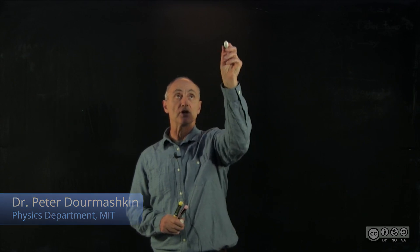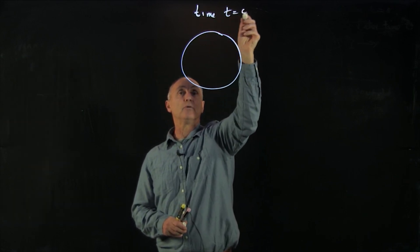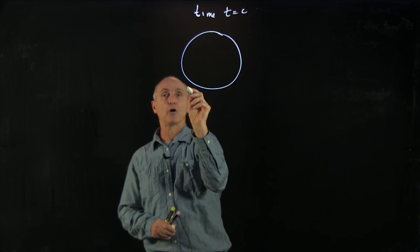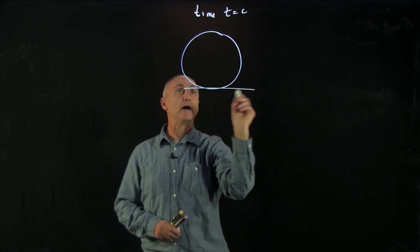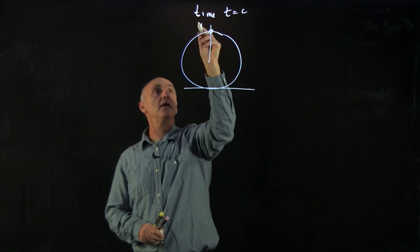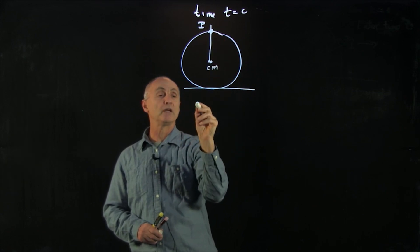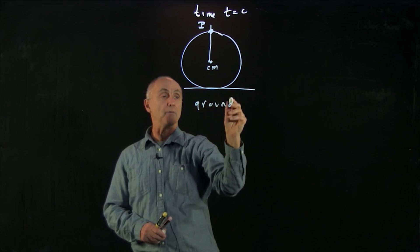Let's now consider our rolling wheel. We want to look at some special conditions. So at time t equals 0, we'll have our wheel that's rolling. Here's the ground. Let's say that our point P is right up here at the top. That's cm. And we'll be in the ground frame now.